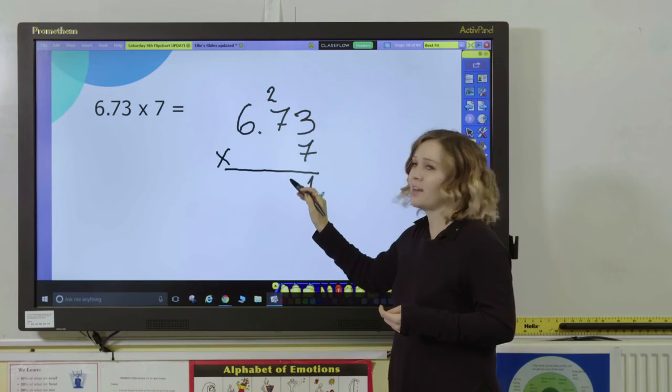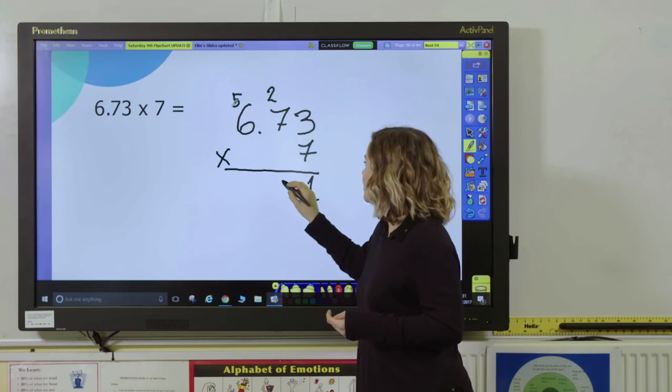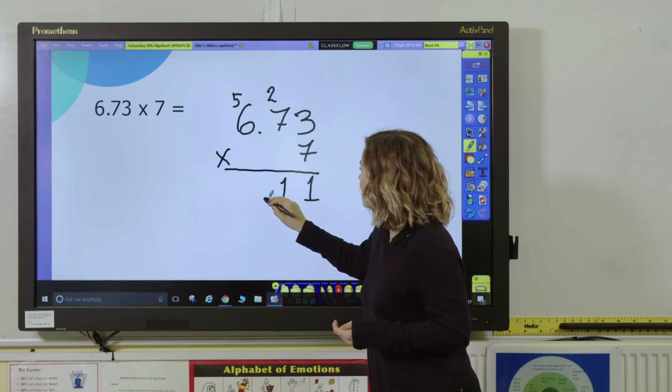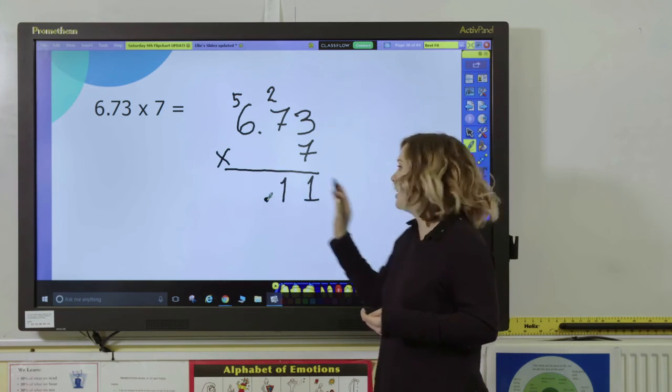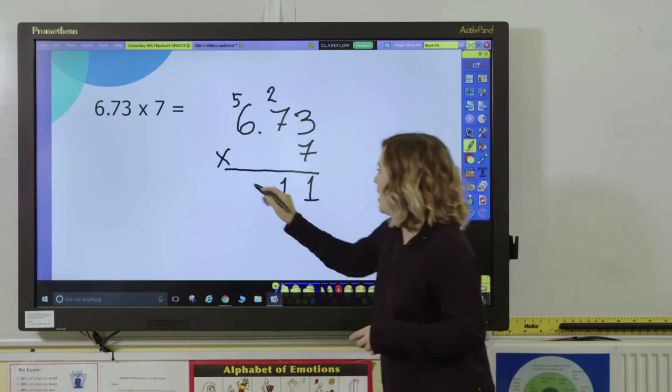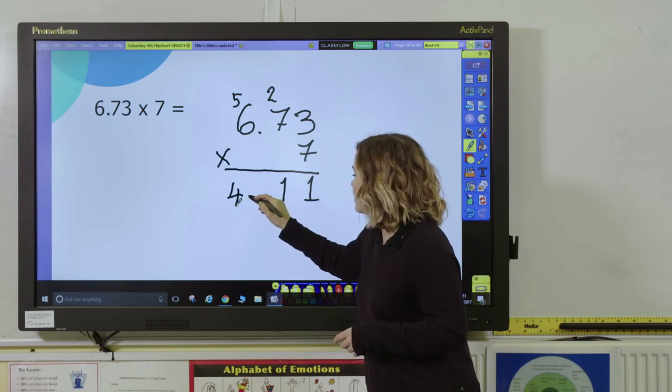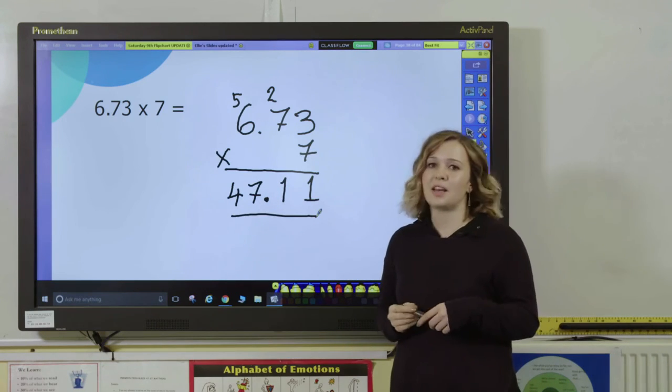Seven times seven tenths is forty-nine tenths. I'll add my two tenths up there which gives me a total of fifty-one. You must make sure the decimal point is in the same place. We don't want moving that either way. And then six times seven, which is forty-two, add my five, which gives me forty-seven. So my answer here would be 47.11. And that's how you can use a variety of methods to multiply decimal numbers by a whole number.